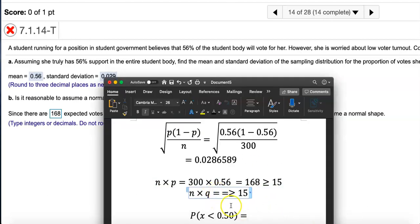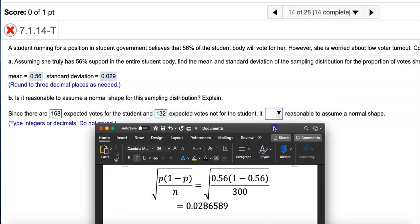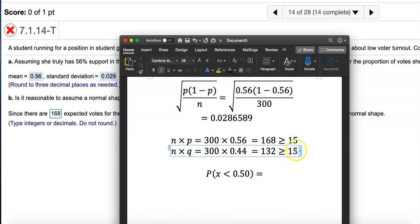You can find this by using that other formula n times q, and q is the proportion of people who will not vote for her. If 56% will vote for her, 44% will not vote for her, so q here is 0.44. If you do 300 times 0.44 you will get 132. Either way we get 132.